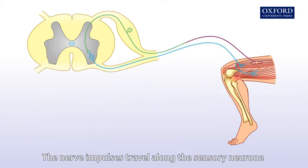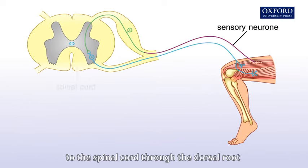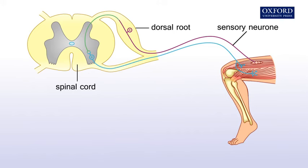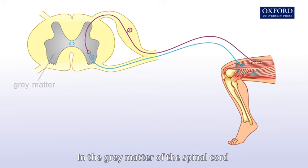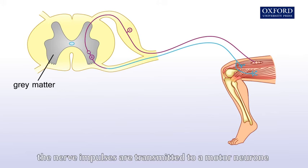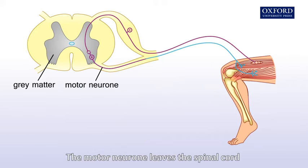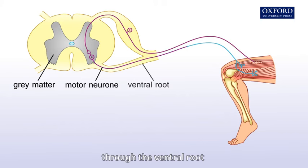The nerve impulses travel along the sensory neuron to the spinal cord through the dorsal root. In the grey matter of the spinal cord, the nerve impulses are transmitted to a motor neuron. The motor neuron leaves the spinal cord through the ventral root.